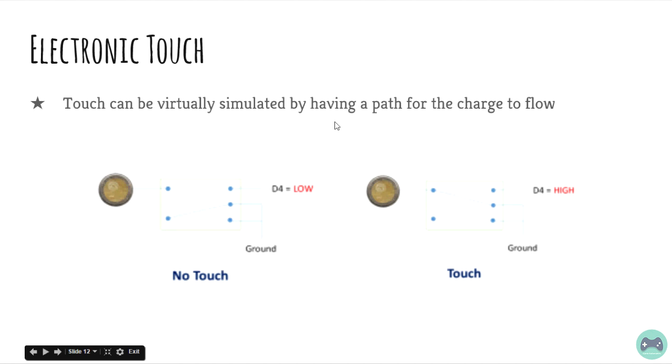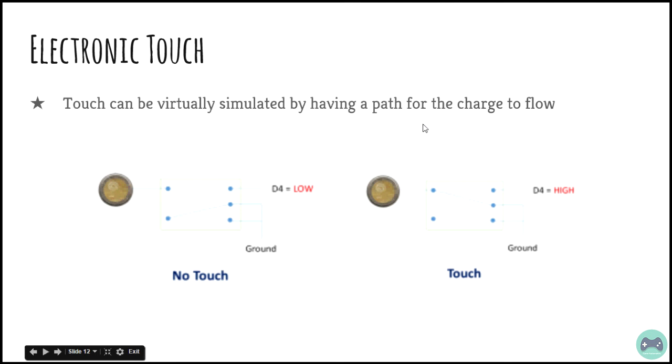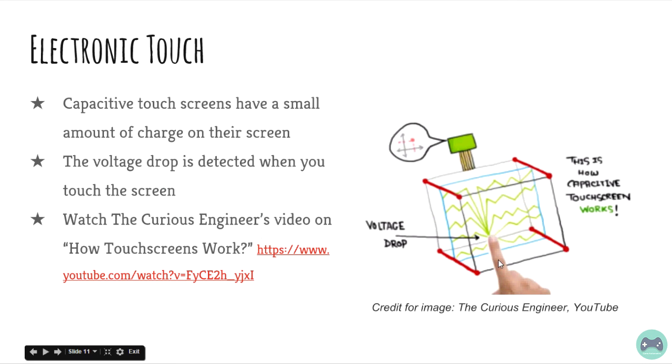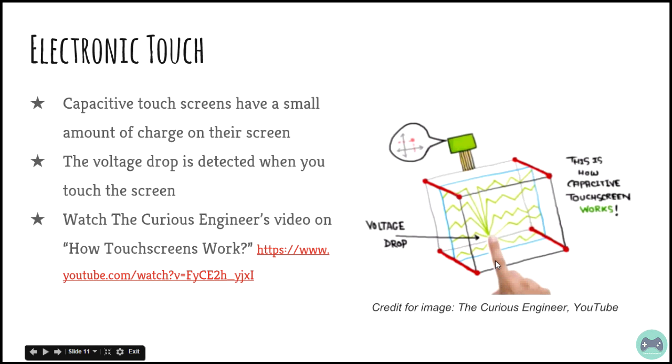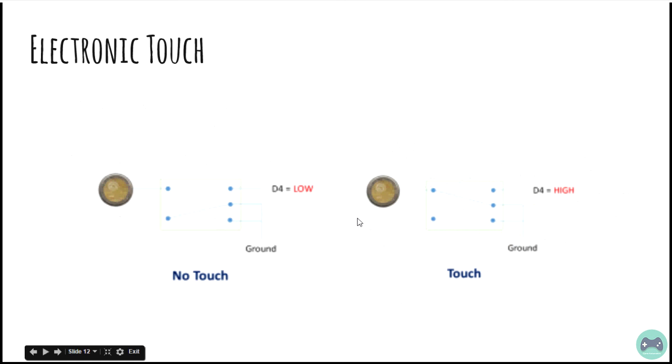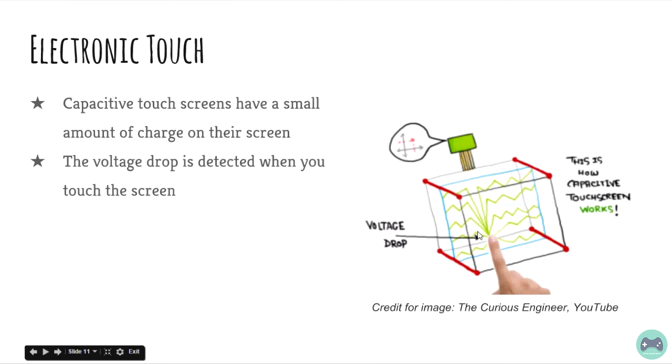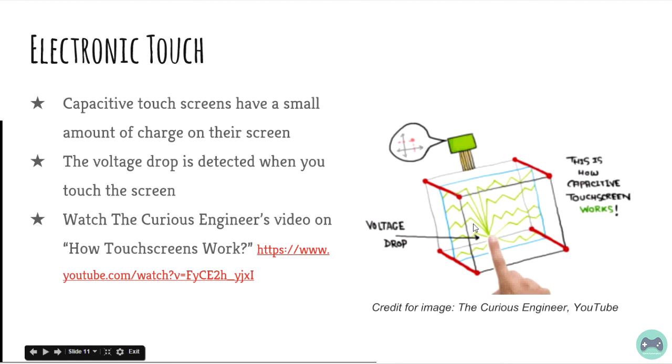Touch can be virtually simulated by having a path for the charge to flow. That's what's happening here, right? When you have a finger, you have a path for the charge to flow and the touch is detected.